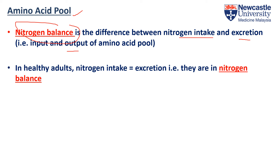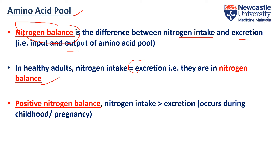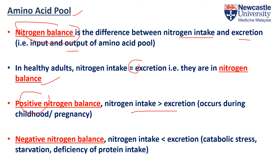In healthy adults, input equals output, so it is in balance. When intake is larger than excretion, you have a positive nitrogen balance — this happens during childhood or pregnancy, because in both children and a growing fetus, more protein intake is needed to spur development. On the other hand, when intake is smaller than excretion, you have a negative nitrogen balance, which usually happens during starvation or during protein deficiency.